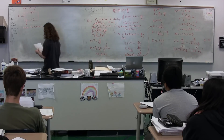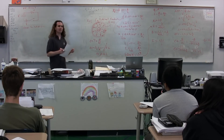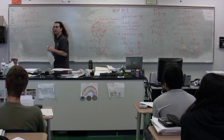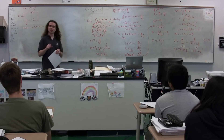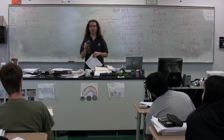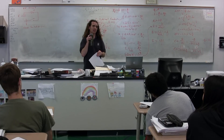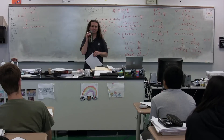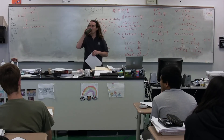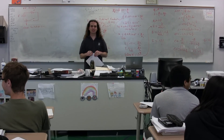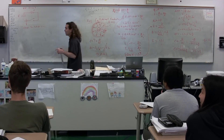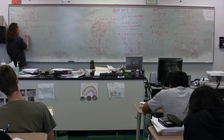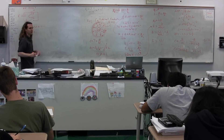Let us walk through our goals to figure out charge and current as a function of time. Where do we start? We are going to draw a loop. Here is our loop. What is the electric potential difference around a loop? Zero. Tyler, go all the way around the loop for me, please.